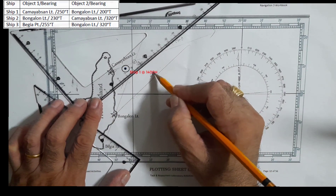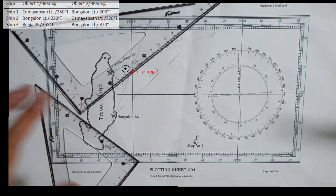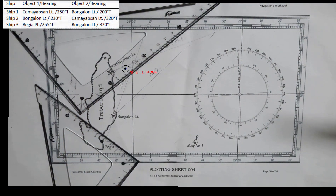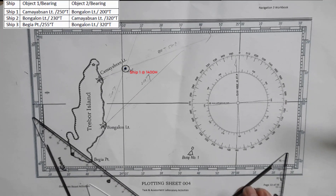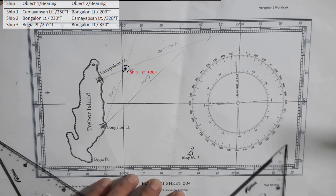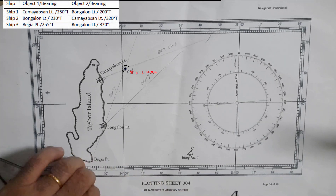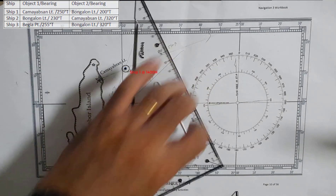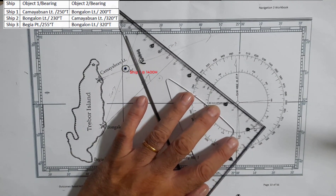Simultaneously, Kamayab San from Ship 2 also bears 320°. So 320 — Kamayab San. We now have the fix of Ship 2.